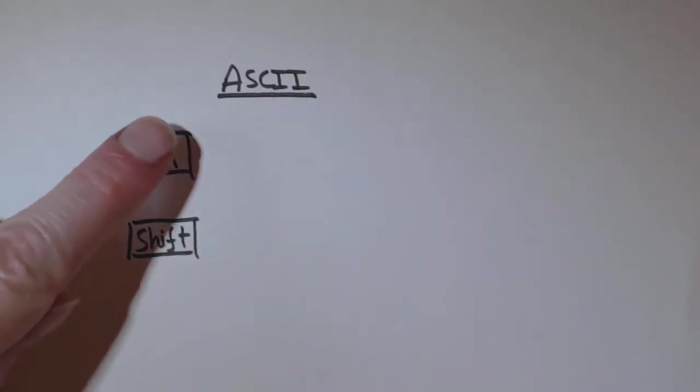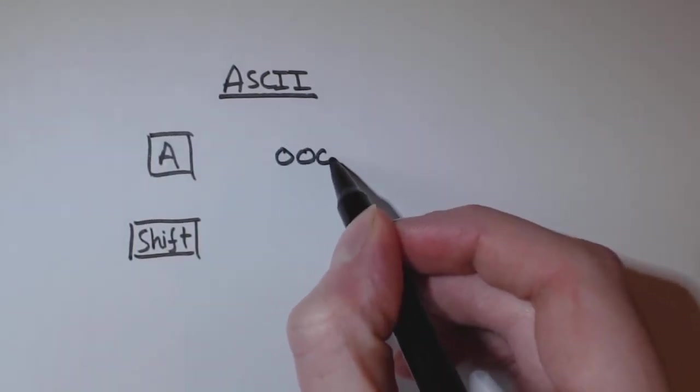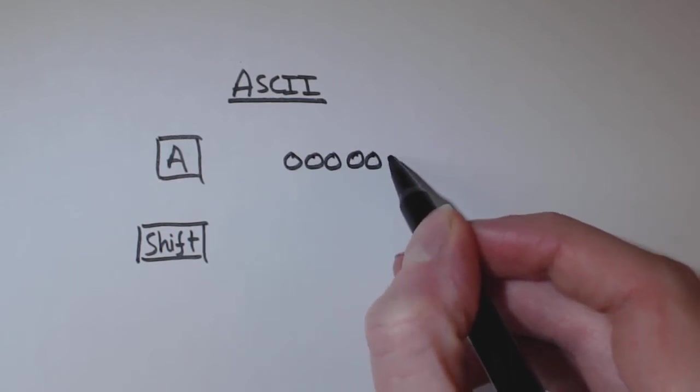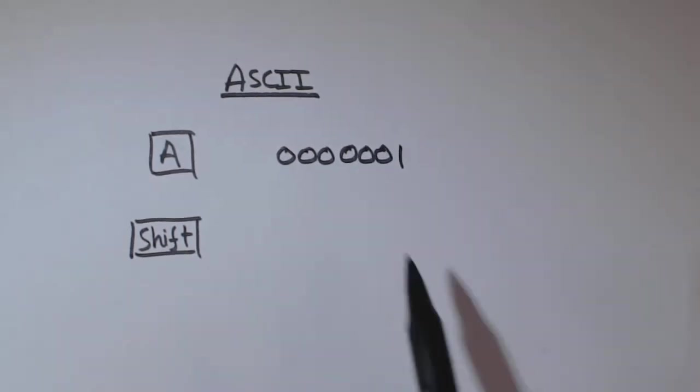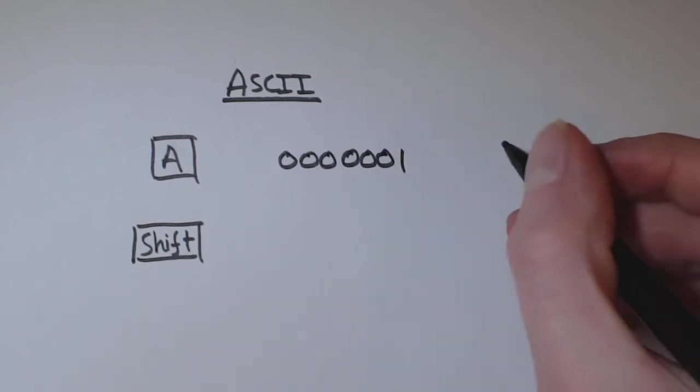For instance, if I pressed A in the binary code, now I'm just making up the actual code, but say it's 0000001. Now, that's 7 bits.